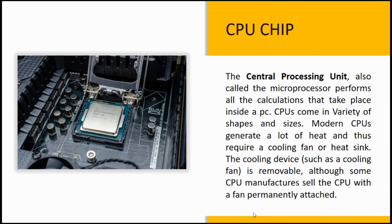The next one is the CPU chip. The CPU is the electronic circuitry in a computer that executes instructions making up a program. CPU stands for Central Processing Unit, also known as the central processor or main processor. The CPU executes basic logic, arithmetic, controlling, as well as input and output operations specified by the instructions in desktop programs.